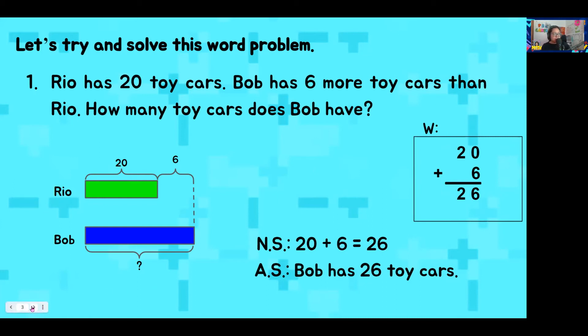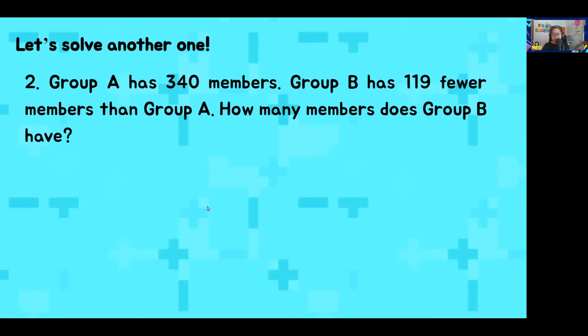Let's move on to our next word problem. Number 2. Group A has 340 members. Group B has 119 fewer members than Group A. How many members does Group B have? Again, first we need to ask ourselves, how many groups are in the story? Yes, you are correct. There are two groups in our story, Group A and Group B. So, we should write them down in our model.